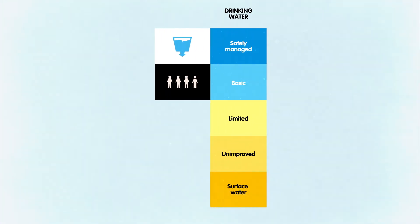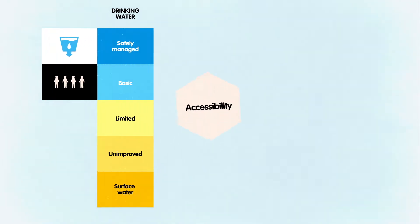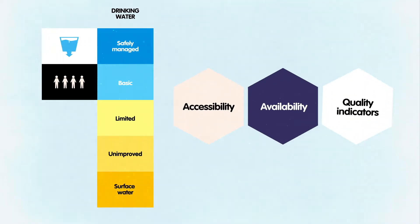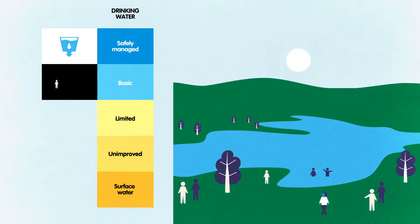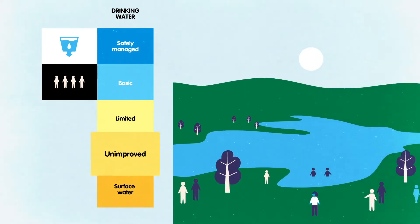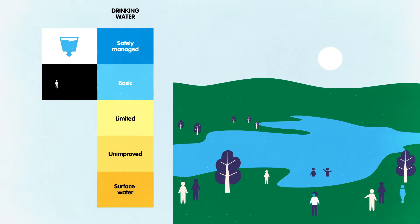The state of drinking water services is determined using water accessibility, availability, and quality indicators. On the bottom ranks of the ladder are surface water, unimproved, and limited water services.